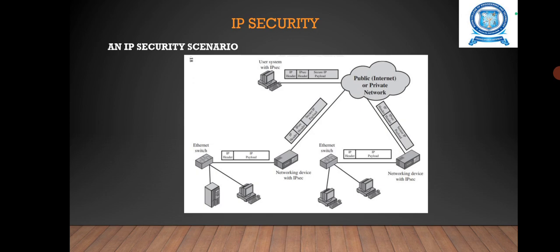Next, we are going to see an IP security scenario. In this IP security scenario, enhancing electronic commerce security — even though some web and electronic commerce applications have built-in security protocols, the use of IP security enhances that security. It guarantees that all traffic designated by the network administrator is both encrypted and authenticated. That means it is implemented as a firewall or router. It provides strong security that can be applied to all traffic crossing the perimeter. It can be transparent to end-users. There is no need to train users on security mechanisms or issue material on a per-user basis.